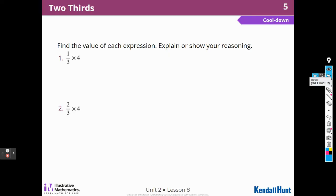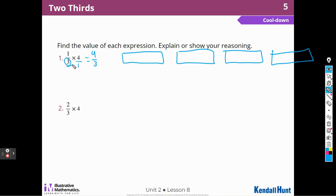All right, now we're going to go on to the cool-down. Find the value of each expression, explain or show your reasoning. So I know that I could put any whole number over 1 and multiply across, and I would get 4 over 3. But I could also draw 4 objects: 1, 2, 3, 4. And divide them into thirds and shade in one part of each one. And how many one-thirds would I have? I would have 4 of them. Okay.